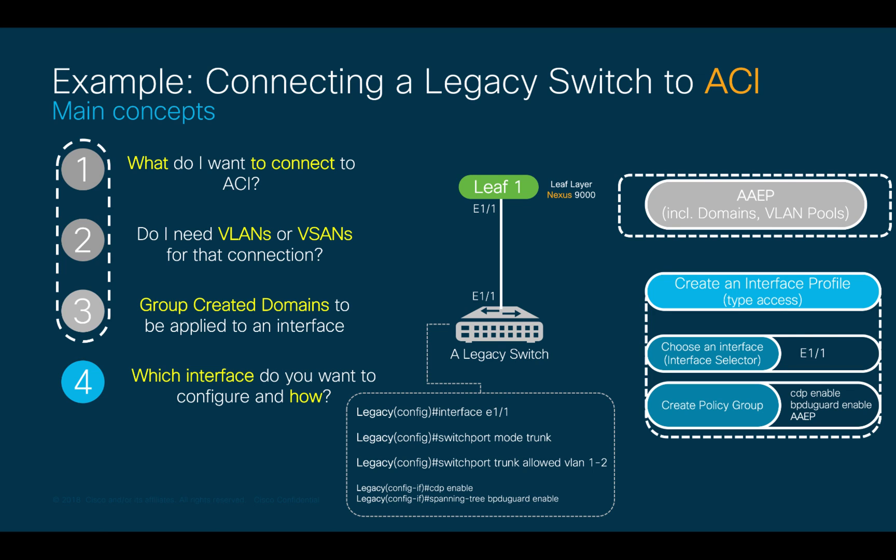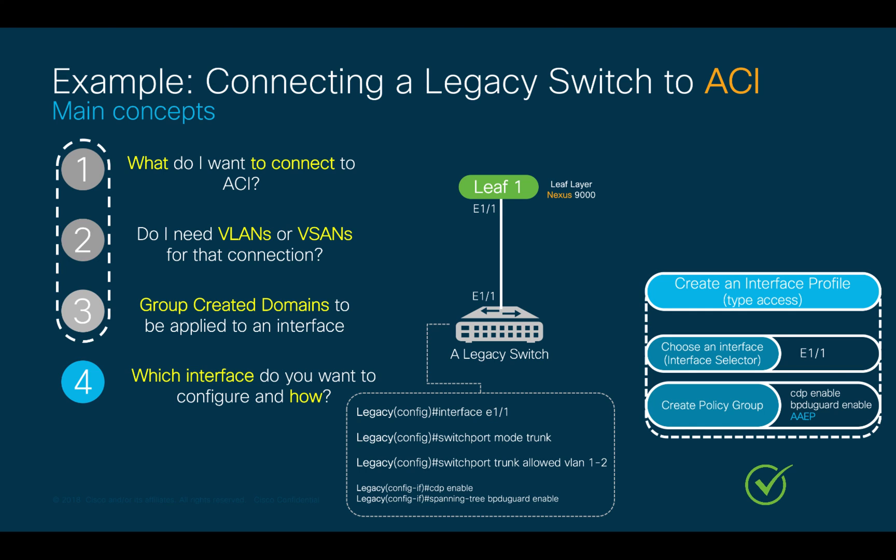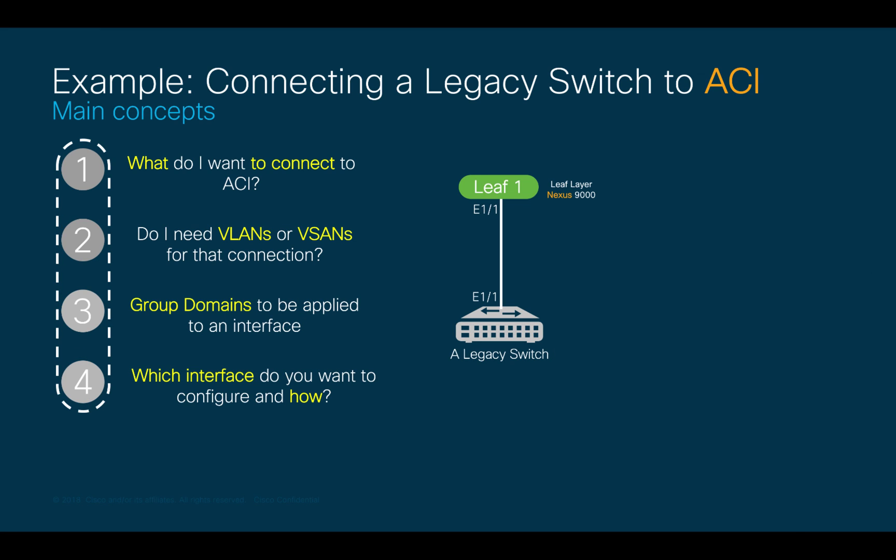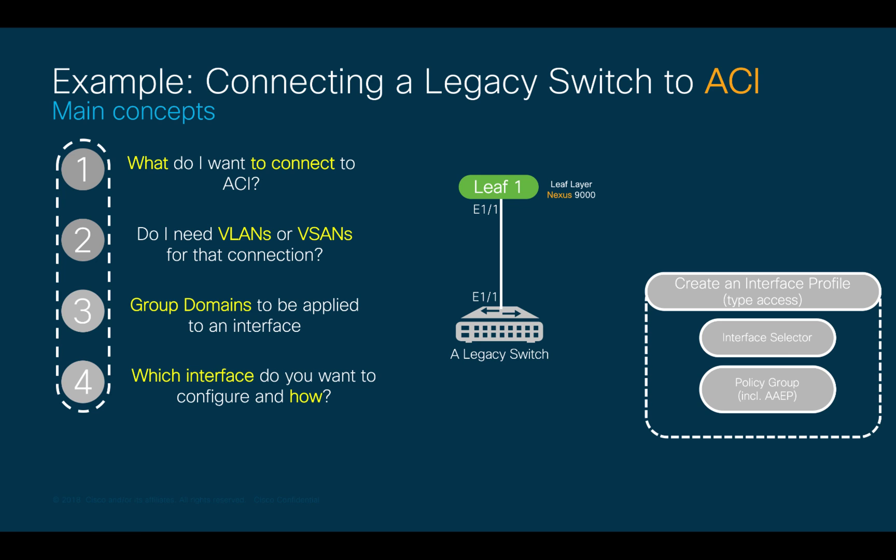This interface profile will have a policy group with all the policies I may want to enable for this interface. In my case, they are going to be BPDU guard, CDP enable, and obviously the AAEP I created on step 3. As you can see, configurations are very similar if we compare the legacy switch one and the physical network configuration on ACI. So, our knowledge as network admins is still very relevant. All four previous steps, which are grouped together by the interface profile, are now available to be assigned to a switch or switches. We will do that in our final step 5, where we will choose leaf 1 by creating a switch profile and switch selector, and attaching the interface profile we created in step 4 to it. That's it!